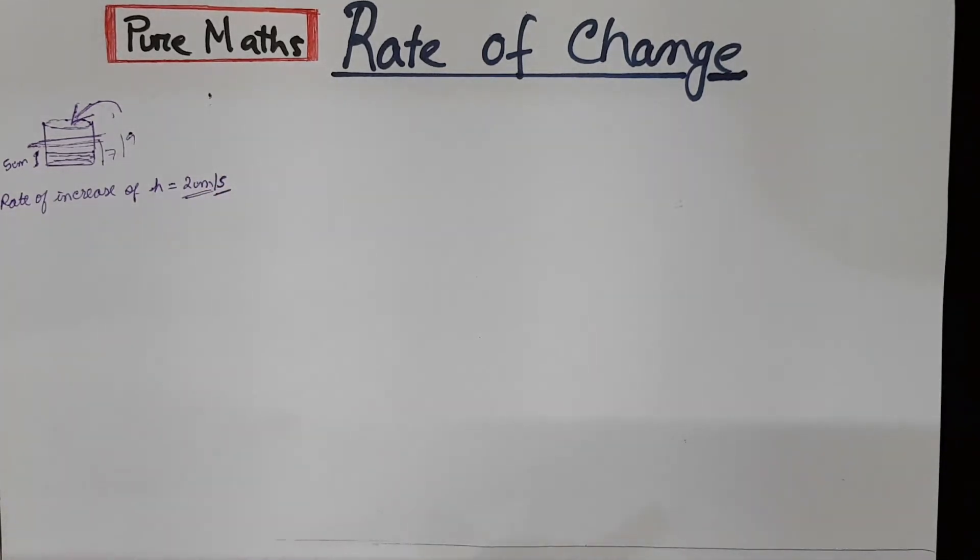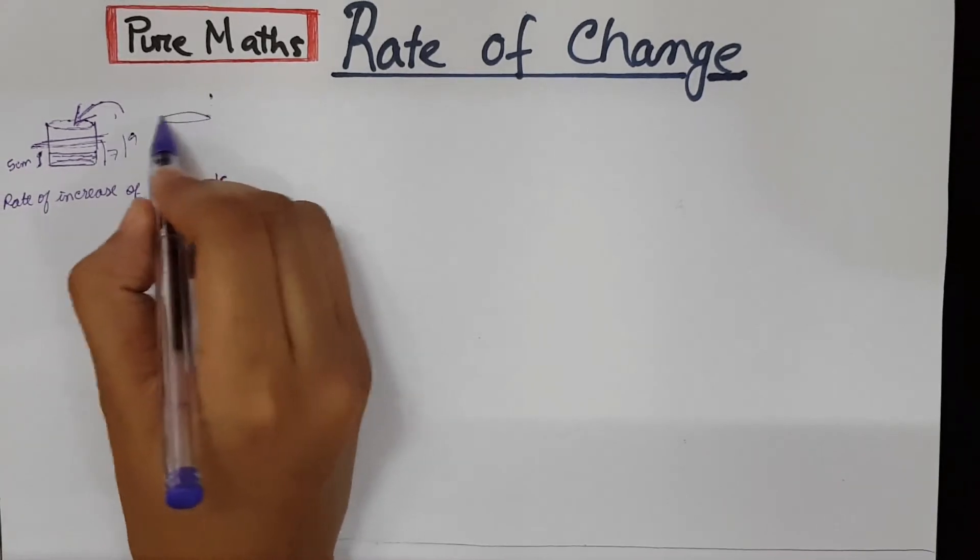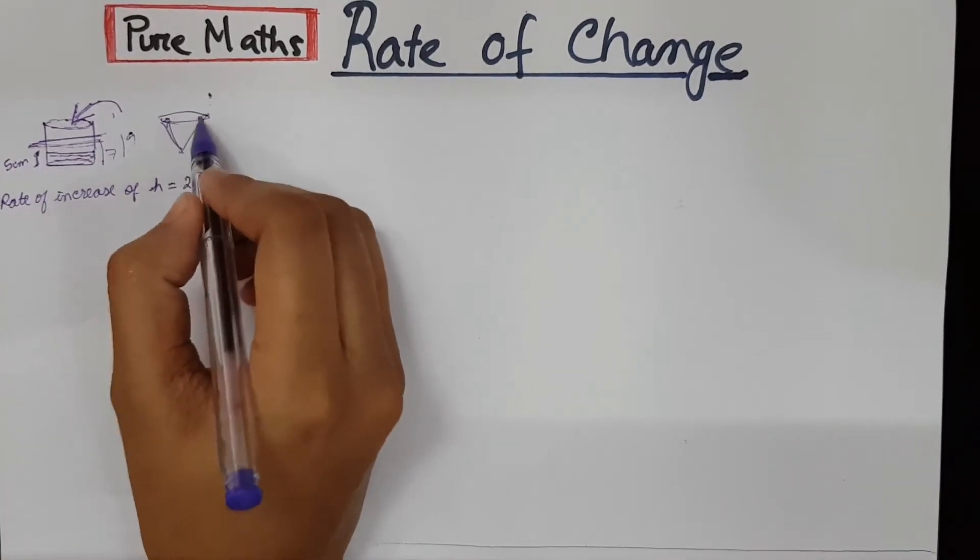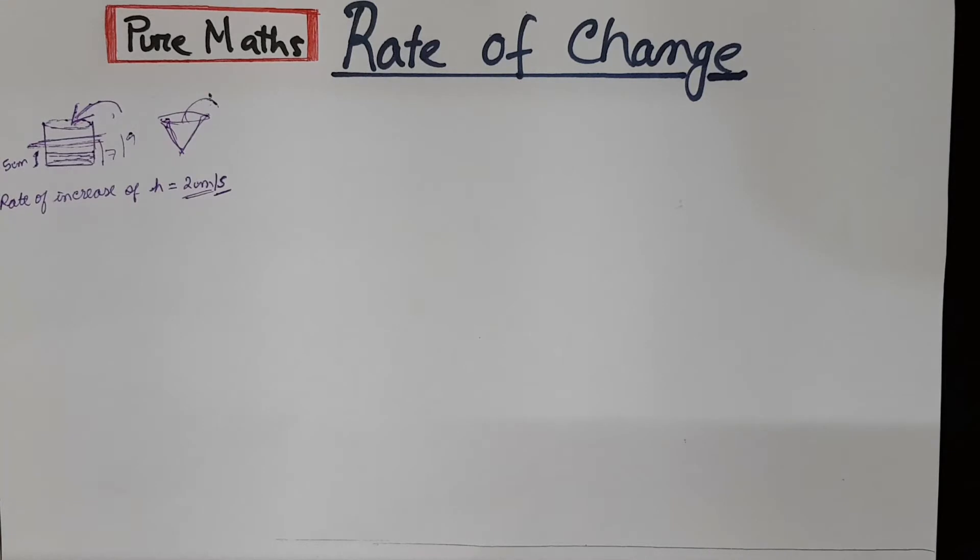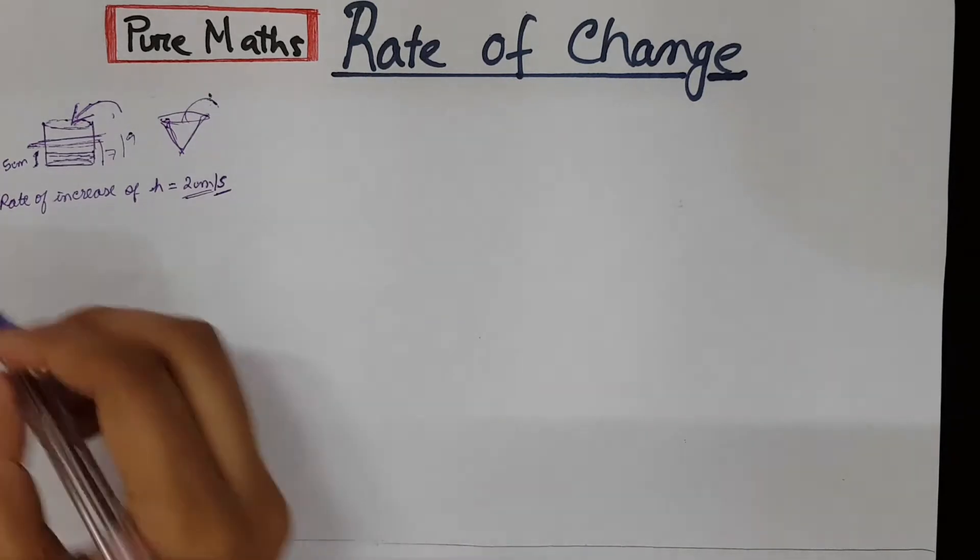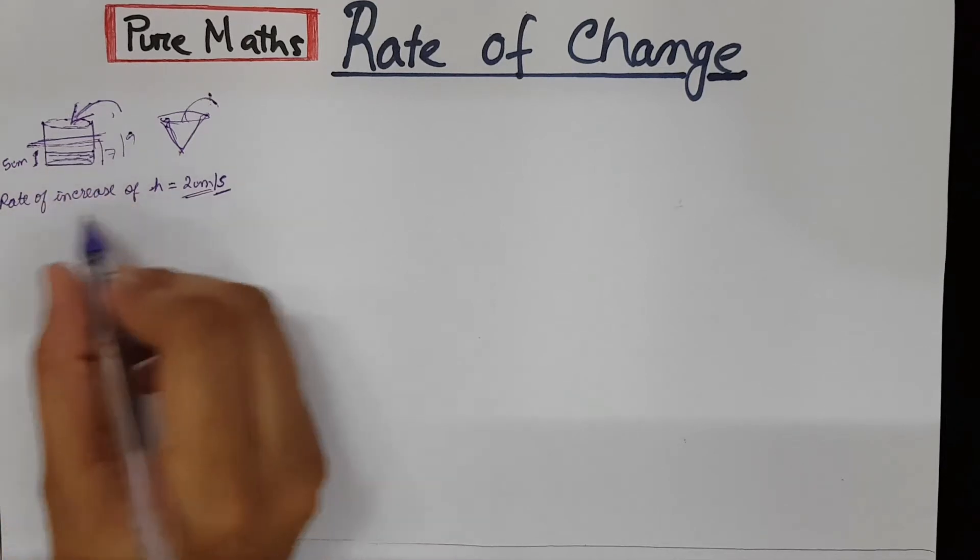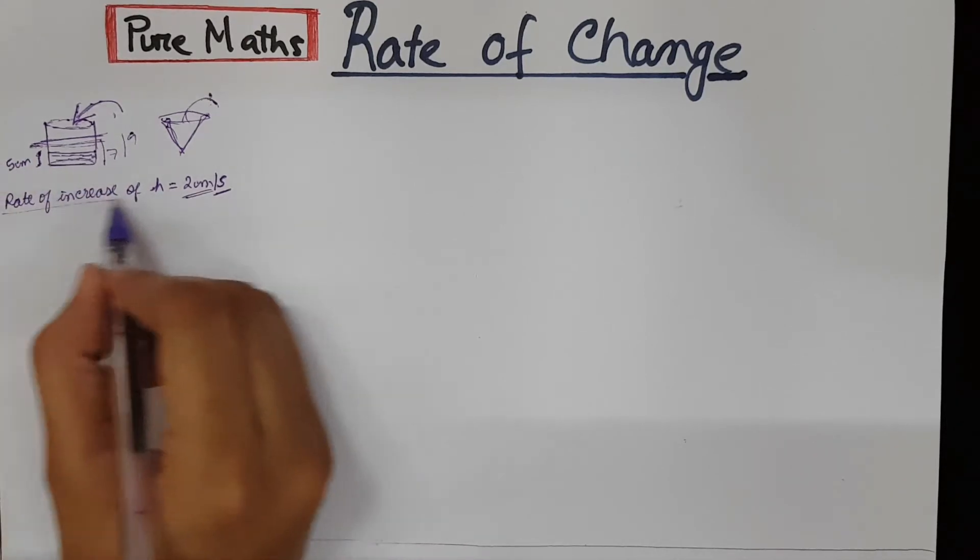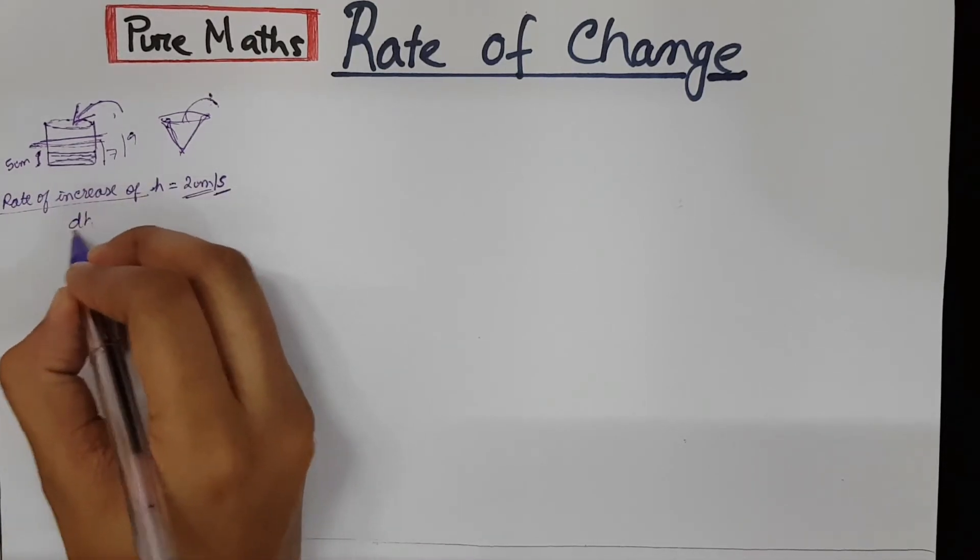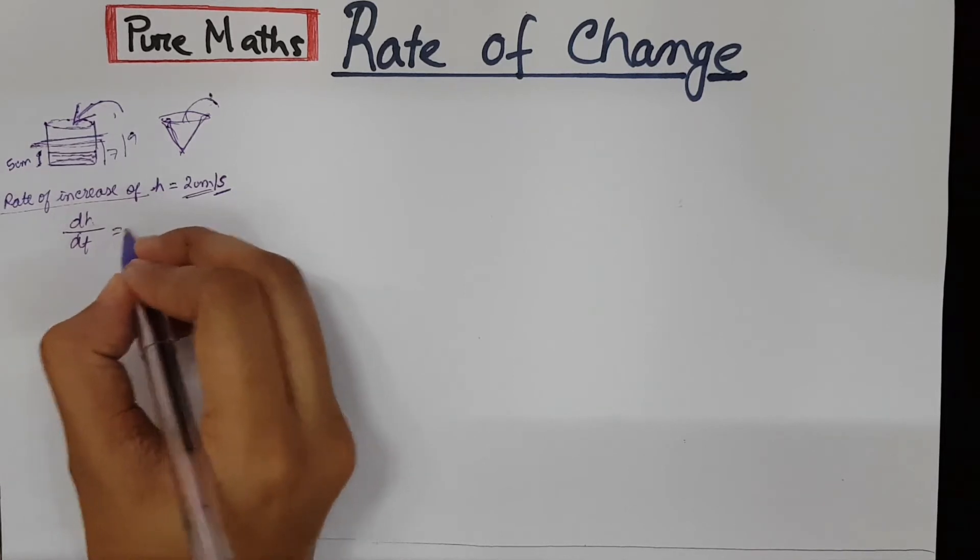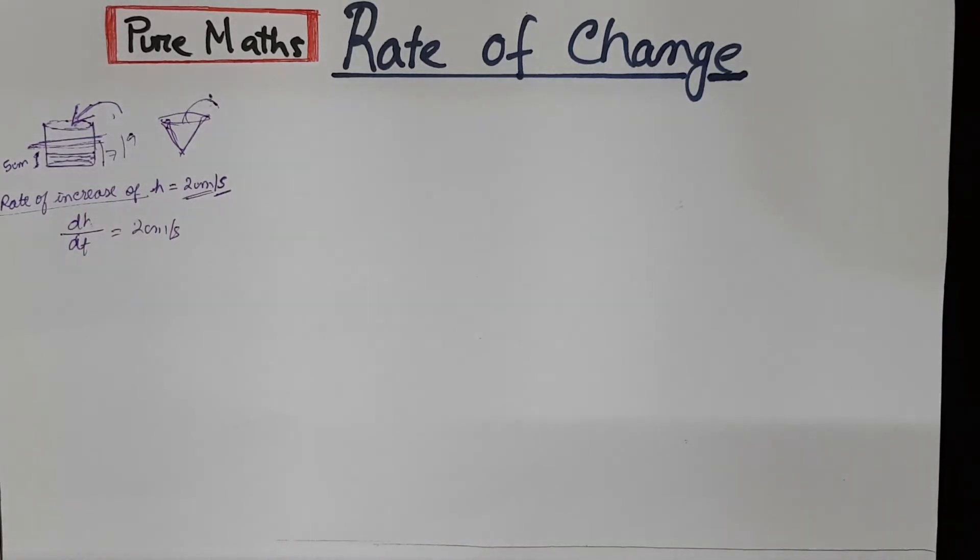Okay, so the flask can be an inverted cone shaped conical flask. So whatever the shape is, the rate of increase means you have to differentiate the equation. For example, rate of increase of height you can write dH/dt equals to 2 cm per second. So it means you need to have a clear concept of differentiation.